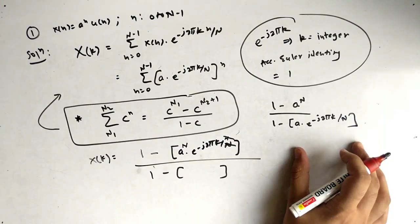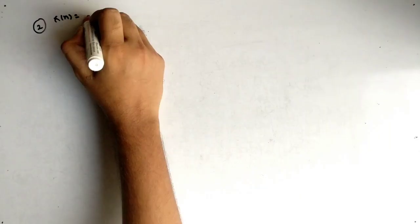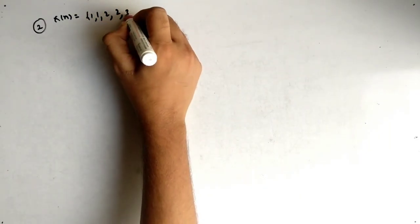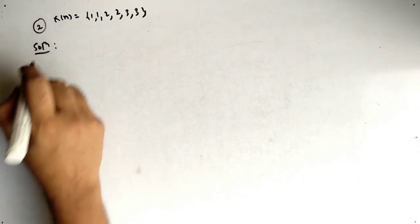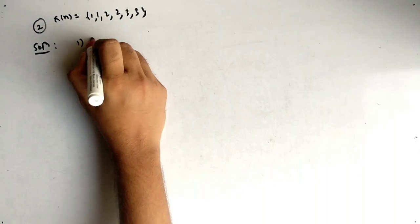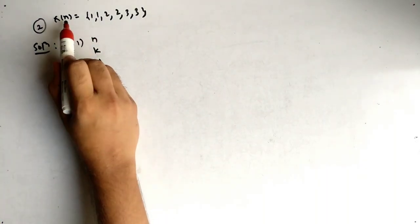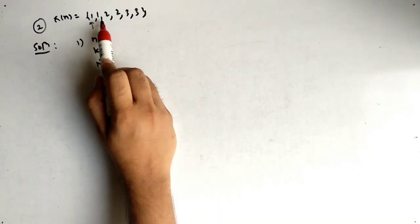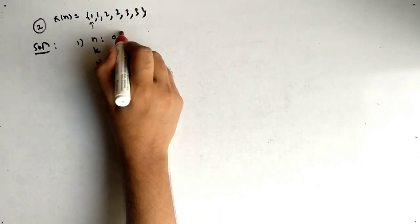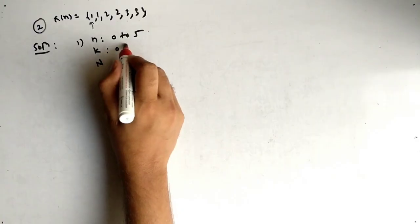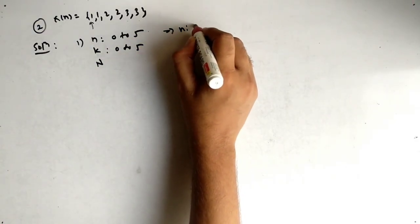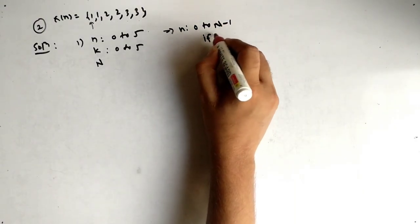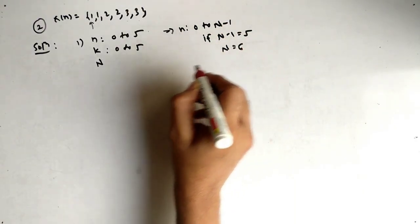The second question is: x[n] = {1, 1, 2, 2, 3, 3}. Find the DFT. First we identify the terms: n starts from 0 and goes to 5, so n ranges from 0 to 5, meaning k also ranges from 0 to 5. Since n ranges from 0 to N minus 1, and N minus 1 equals 5, therefore capital N equals 6.